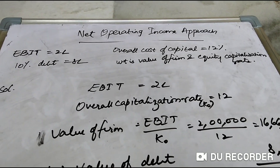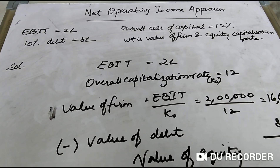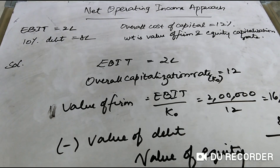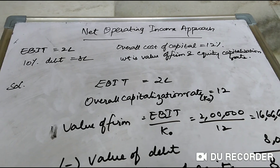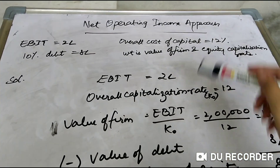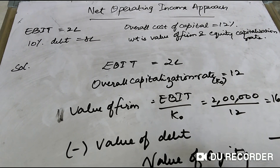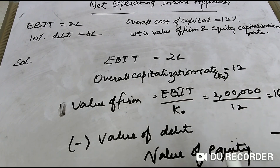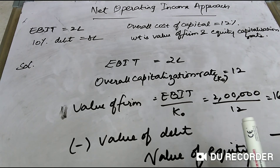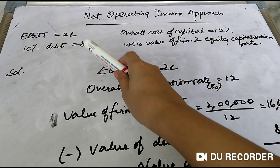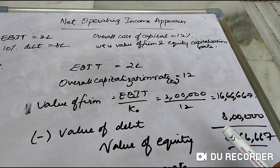Previously we used to calculate the value of the firm and then value of debt by deducting it. Here we are going to calculate value of the firm and the equity capitalization rate. The overall capitalization rate is given together — 12% — for both sources of funds. Value of Firm = EBIT ÷ K0. EBIT is 2 lakh rupees and K0 is 12%, so: 2,00,000 ÷ 12% = 16,66,667 rupees.